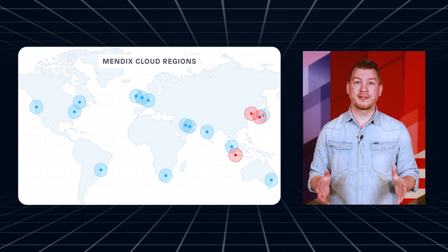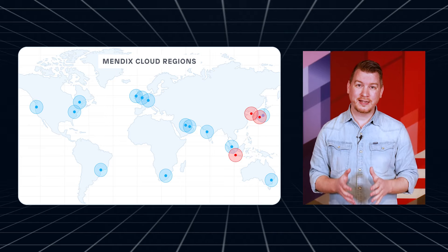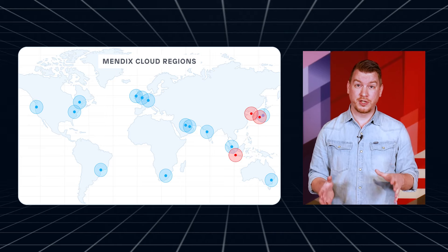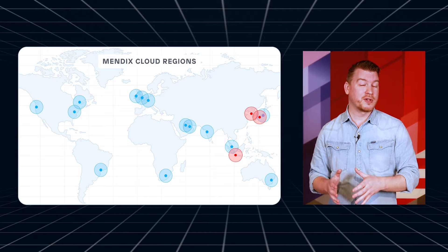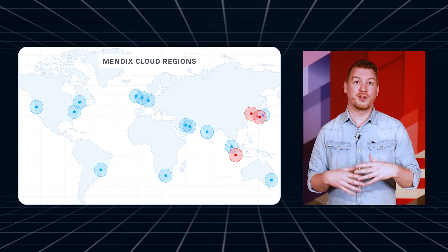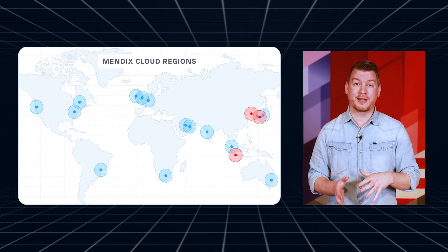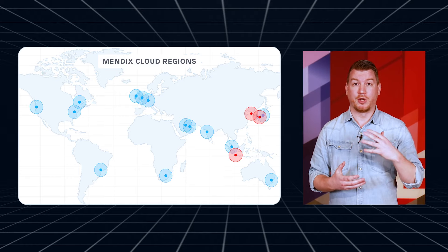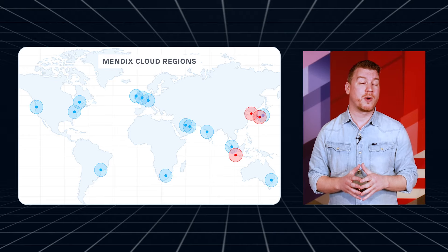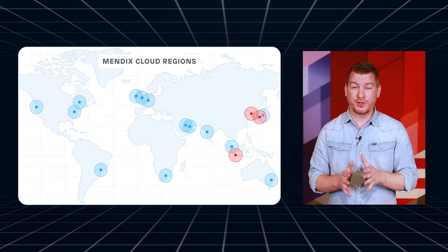Mendix Cloud is now available in Korea and Indonesia, and we've opened a second cloud region in Japan, located in Osaka. With these new regions, local businesses, startups, and enterprises can innovate and thrive in their markets. Customers and users in these countries can now benefit from all the advantages of a local Mendix Cloud region, like low latency and high performance, which is crucial for applications that require real-time data processing and seamless user experiences.